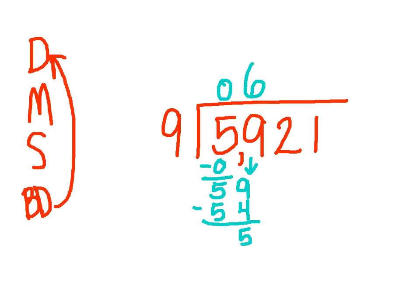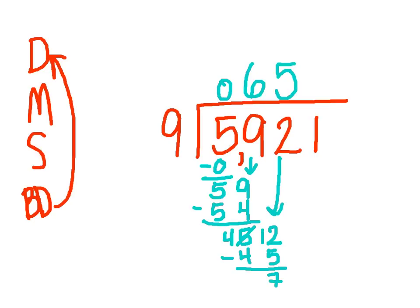I then am going to bring down the 2. Now I need to think how many times does 9 go into 52. If you noticed, 9 times 6 was 54, so I know that's too much. I need to go down just a little bit, so let's try 5 times 9, and I get 45. Then I need to subtract 52 minus 45. I can't do 2 minus 5, so I borrow from the 5, make it a 4. Now I have 12 minus 5, which is 7. 4 minus 4 is 0.